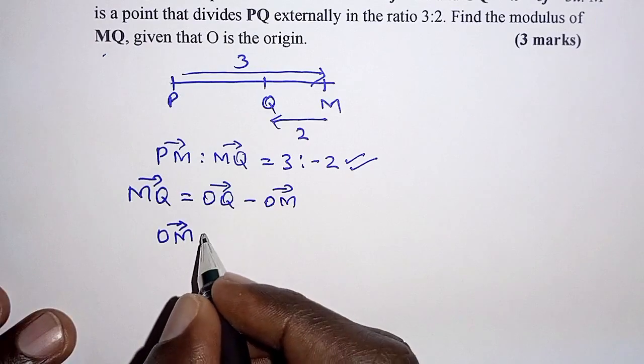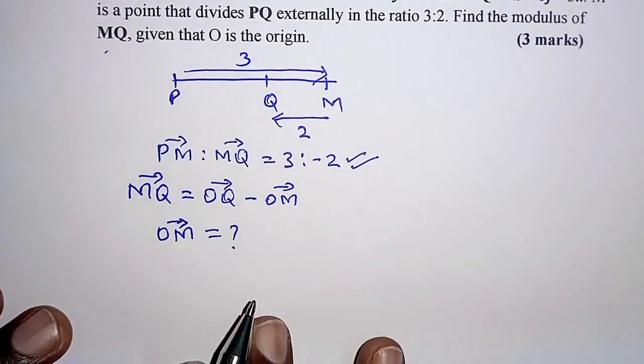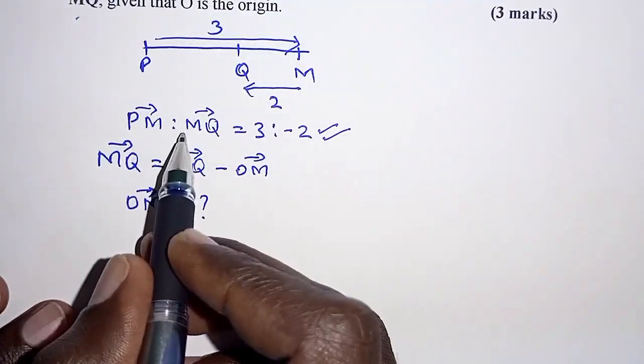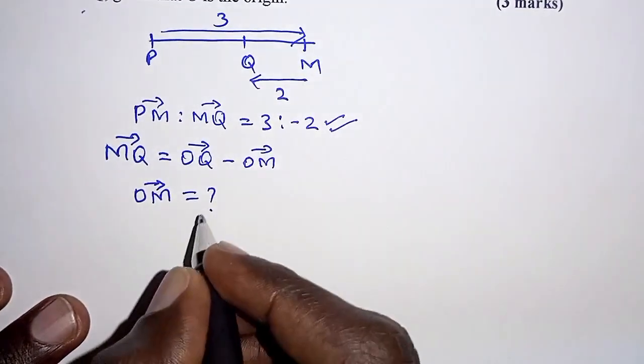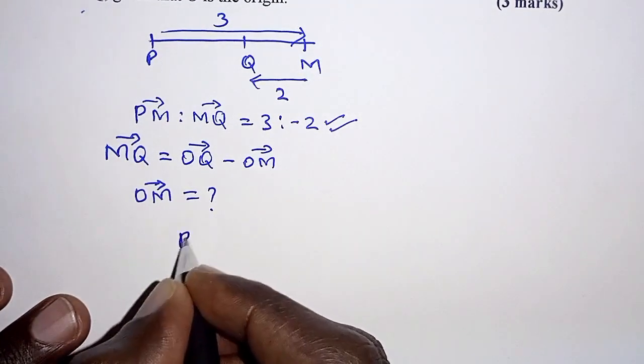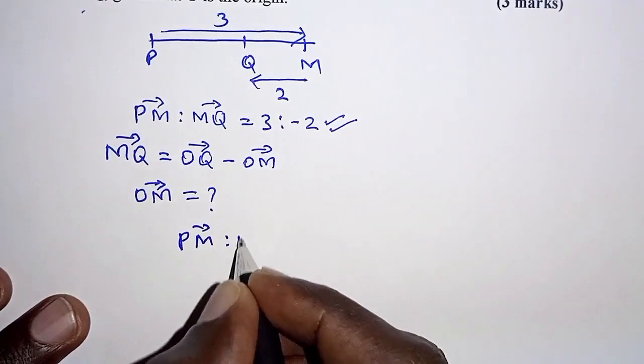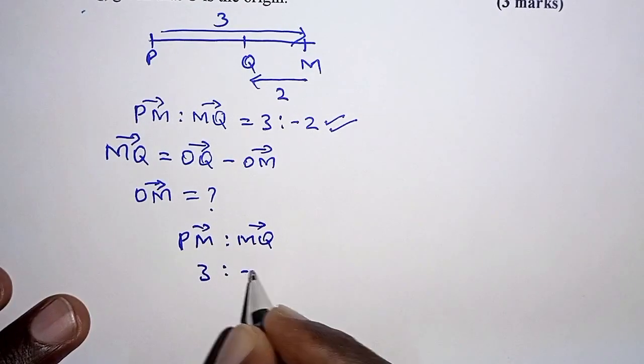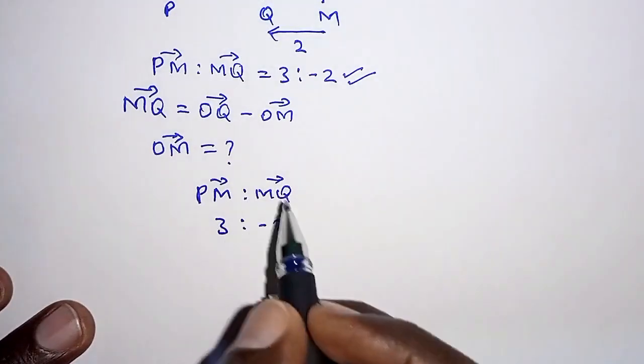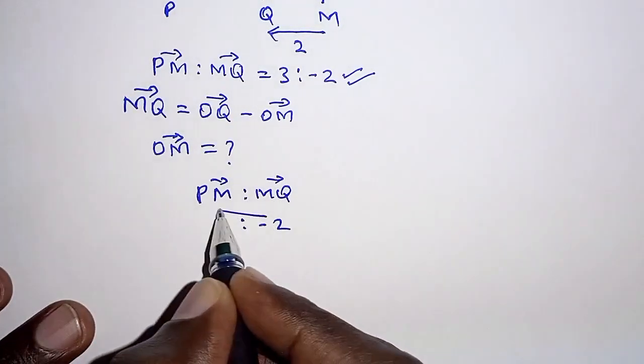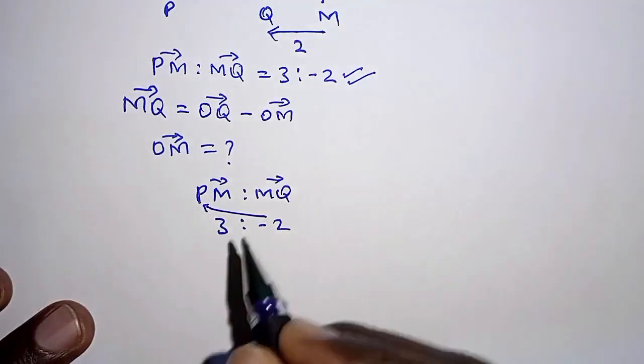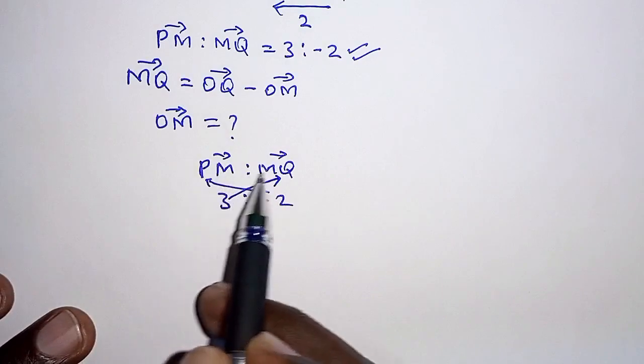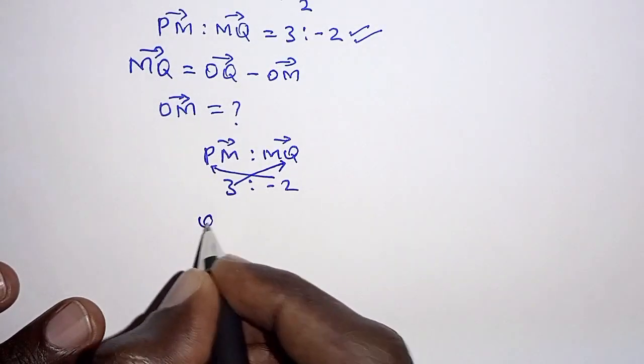OM we are going to determine using the ratio theorem. When you are given this ratio, PM to MQ is 3 to negative 2, we will apply the ratio theorem. So negative 2 we can match with P and 3 we can match with Q. We are looking for position vector of M, which is OM.